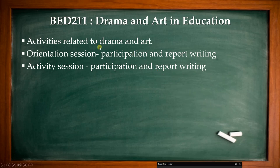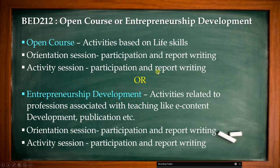BAD 2011 is about drama and art in education — the aesthetic part of the curriculum. Activities related to drama and art are mentioned in the syllabus, and assessment is based on two reports: an orientation report and an activity session report. The last part of the curriculum is the open course or entrepreneurship development — either you go for the open course, where activities based on life skills are mentioned in the syllabus and you select a particular life skill activity, or you go for entrepreneurship development.